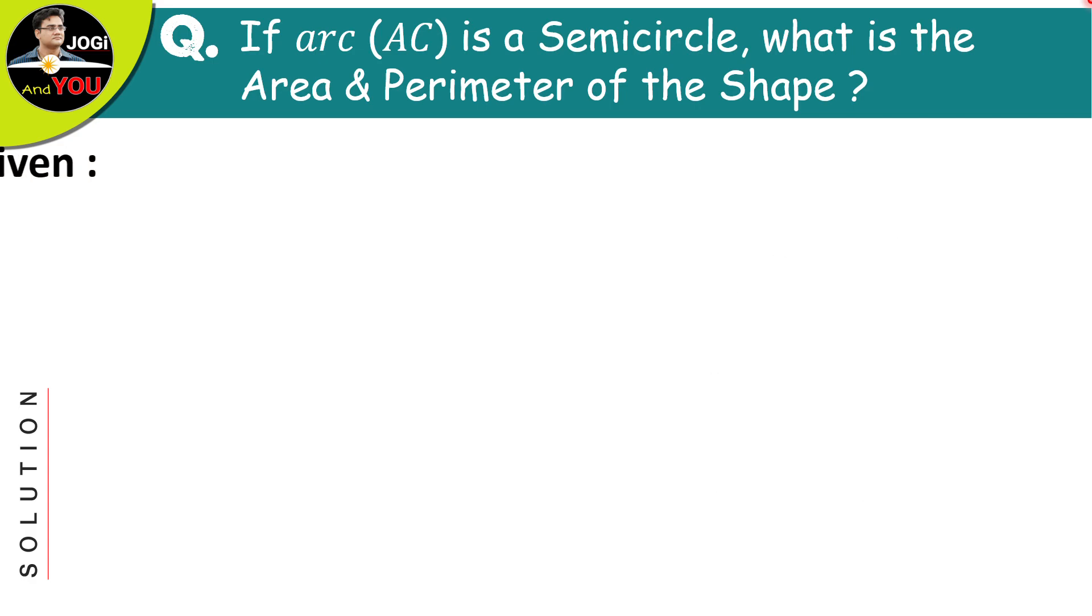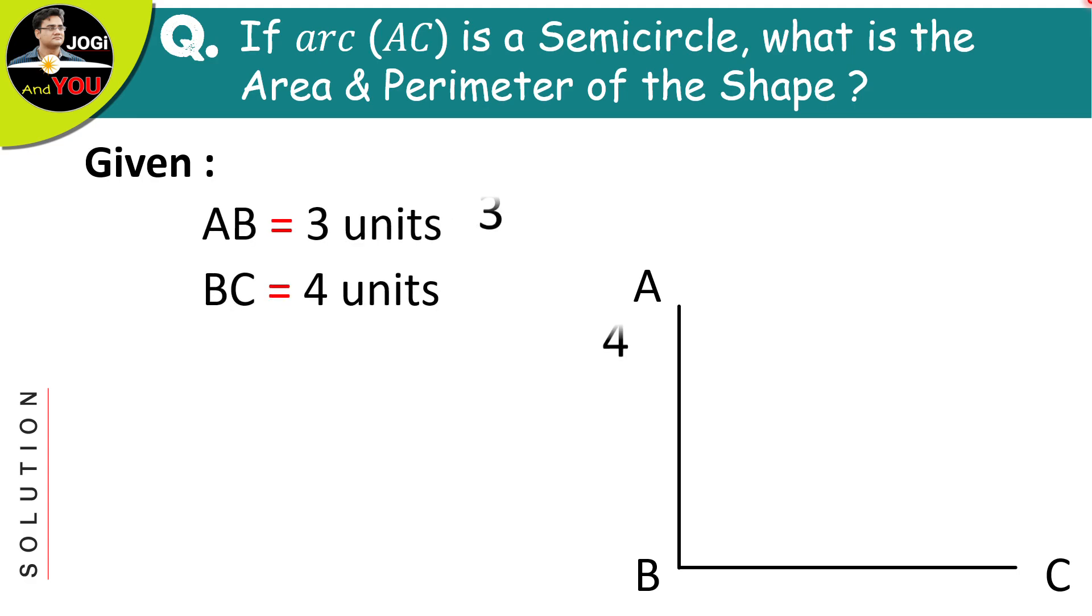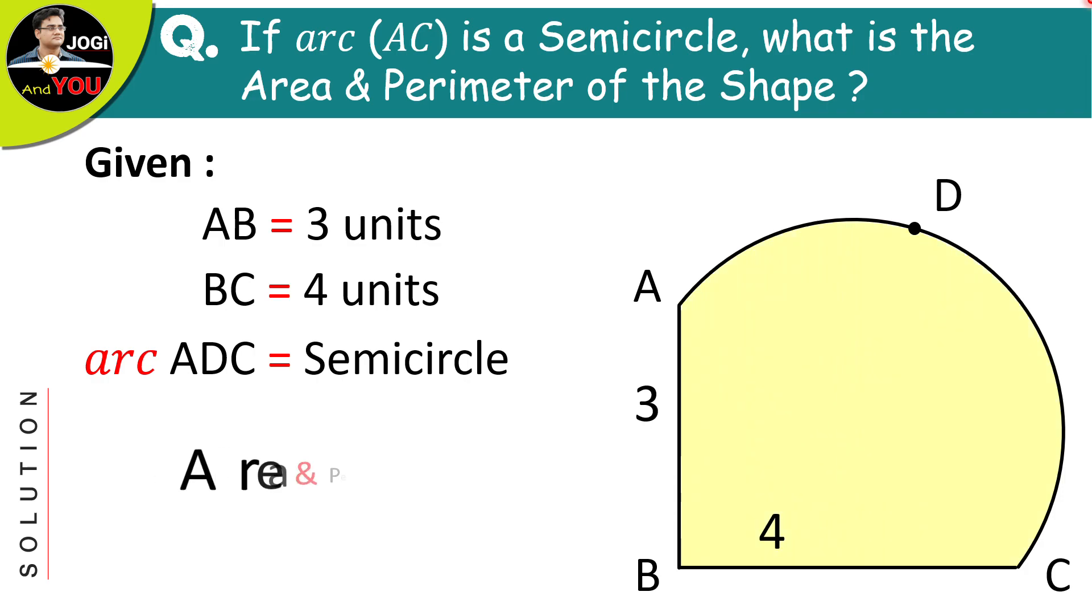So what do we have here? These are two sides AB and BC whose lengths are 3 and 4 units. After that, we have got this arc and it is said that it is a semicircle whose length is not given to us. We have got this little information with the help of which we have to get both the measurements of the shape.